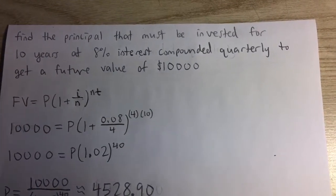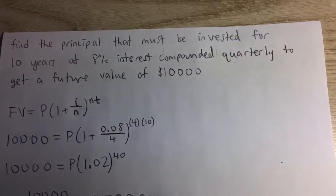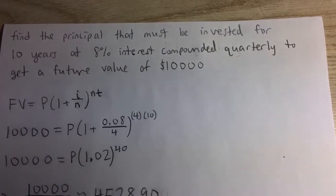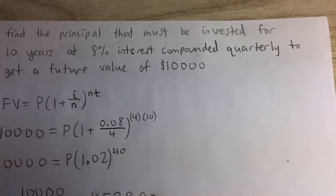Find the principal that must be invested for 10 years at 8% interest compounded quarterly to get a future value of $10,000.